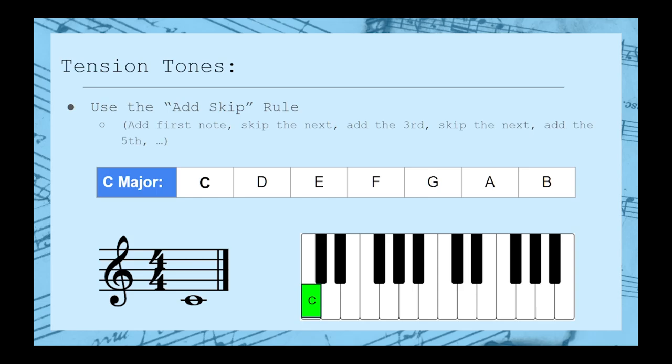C. We'll add it to our chord, skip the next note, add the 3rd, skip the 4th, add the 5th, skip the 6th, and then add the 7th. That's how we get the C major 7 chord.